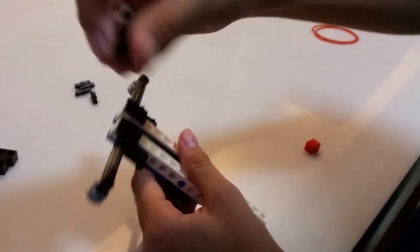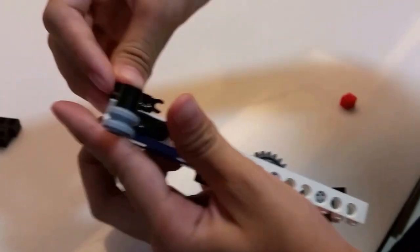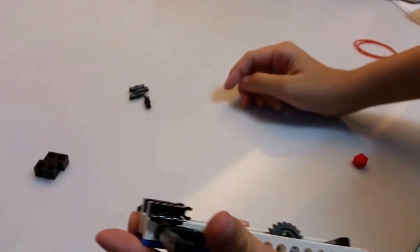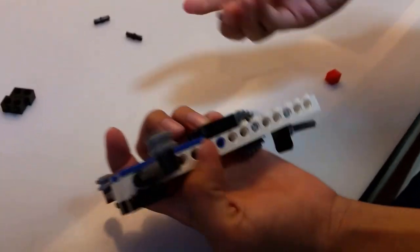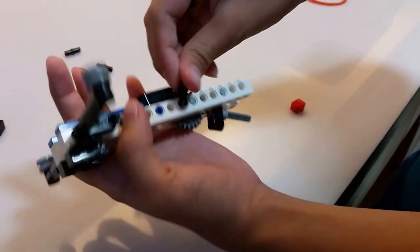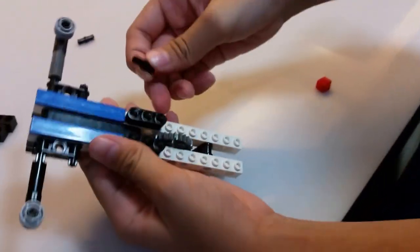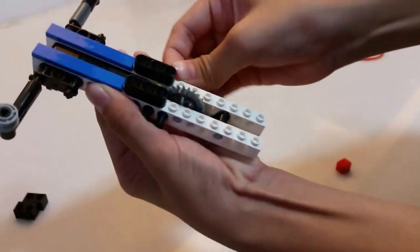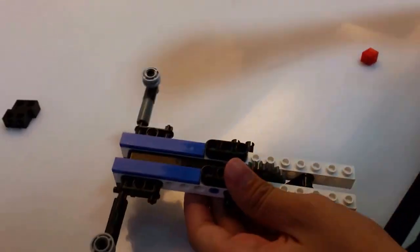Take these pieces with this hook here facing backwards at the front and place them like this. Now take another two more like this. You see these two holes beneath the piece - plug them both there and do the same for the other side like that.